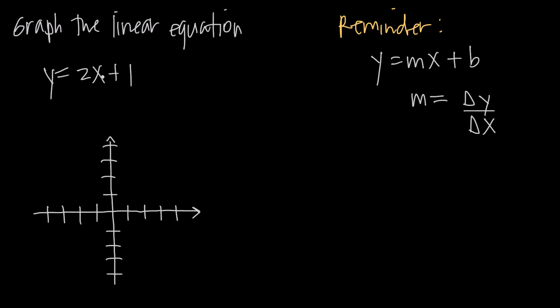The graph of a linear equation is always going to be a line. So whenever you hear linear, you can think line. If we want to draw a picture of what this equation looks like, the picture is going to be a line.